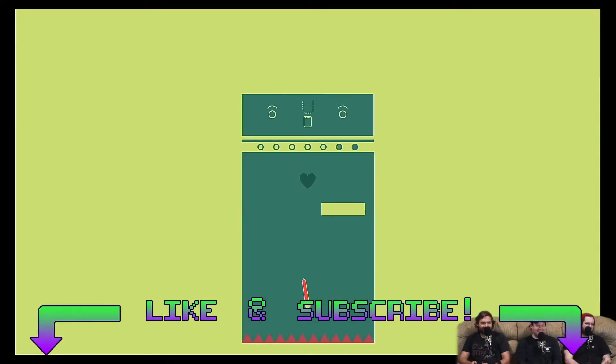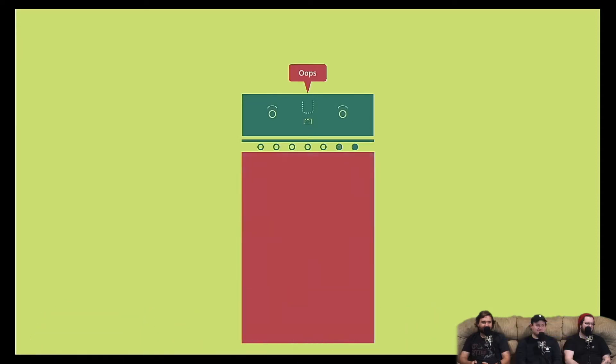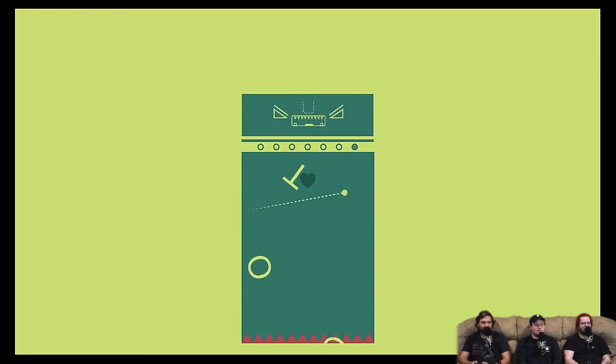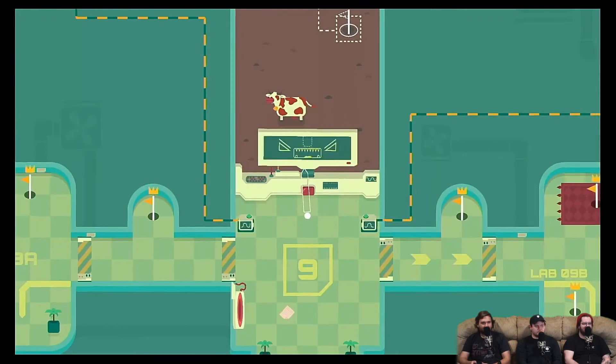God damn it. I was expecting my ball to curve again that time. Fuck this thing. Oh, man. Get out of the way. Oh, I wasn't expecting those to move either. Oh, you got it. Yeah, you cannot have expectations in this game. Fuck that robot.